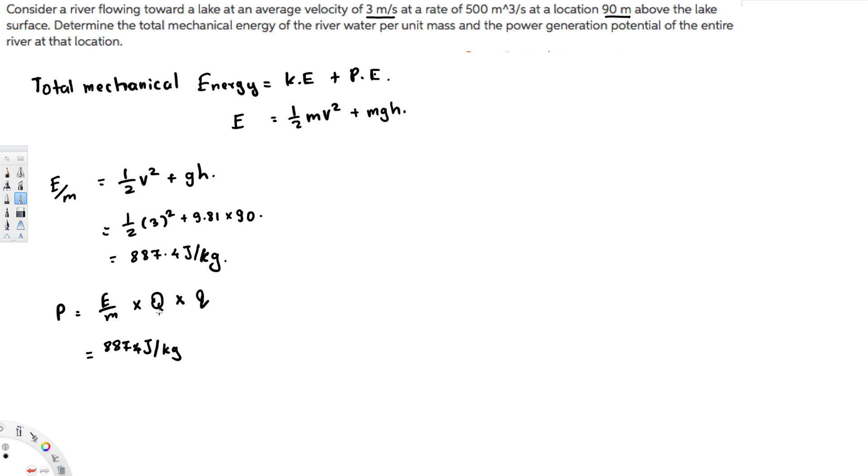That's going to be joule per kilogram, that's what we calculated before, right? And Q, that is volume flow rate, that's provided right here, that is 500 meter cube per second. 500 meter cube per second. And here we are dealing with water so the density of the water is going to be 1000 kilogram per meter cube.